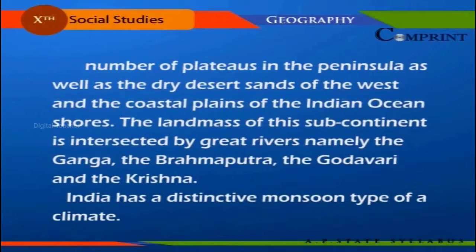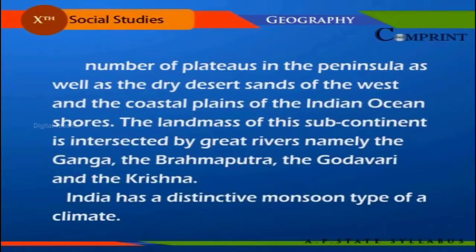The coastal plains of the Indian Ocean shores form part of this subcontinent. The landmass is intersected by great rivers — the Ganga, the Brahmaputra, the Godavari, and the Krishna. India has a distinctive monsoon type of climate. Historically, India has always been a land with people of many religions: Hinduism, Buddhism, Jainism, Islam, Christianity, and other offshoots.